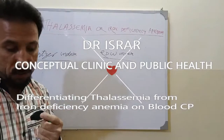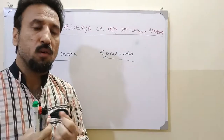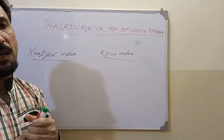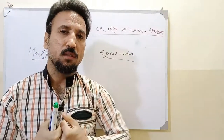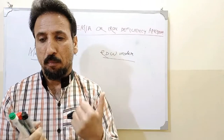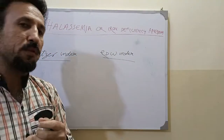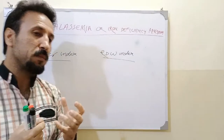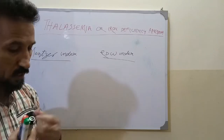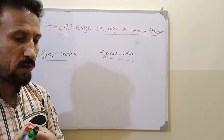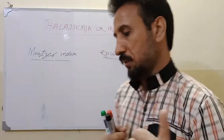Today our topic of discussion is understanding iron deficiency anemia and thalassemia just from the blood CP. It's very important because it is often confusing — both have low MCV and low Hb, and it's very difficult to differentiate whether this is true thalassemia or true iron deficiency anemia. We have two important formulas which can be readily applied and do not need a lengthy mathematical process.